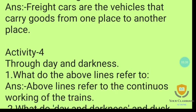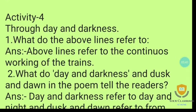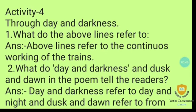Next is Activity 4. Question 1: What do the words 'day and darkness' refer to? The verb lines refer to the continuous working of the trains. 'Through day and darkness' means that the trains work continuously without stopping.